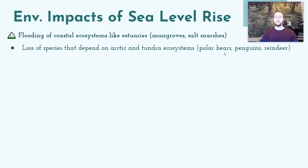Another problem is the loss of polar, Arctic, and tundra ecosystems. The poles are experiencing disproportionate amounts of warming — a topic covered in the next video — and this decreases habitats for organisms like polar bears, penguins, and reindeer. They lose hunting grounds and food sources, potentially leading to a decrease in biodiversity in these regions.